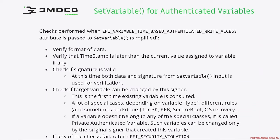We already know how variables are created and updated based on authentication flows explained in previous sections. Let's look into the process of verification which happens every time we try to create or update a variable. The caller of the set variable function handles authentication — it claims the data provided is authentic — but set variable is used to perform authorization. So it checks if the caller is authorized to write to a given variable.